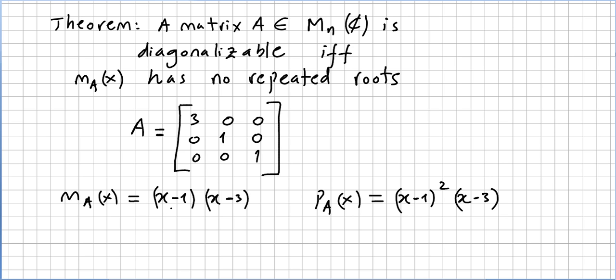So what is the minimal polynomial of A? The minimal polynomial of A will be this one. But the characteristic polynomial is this one, right? x minus 3 and x minus 1, x minus 1.